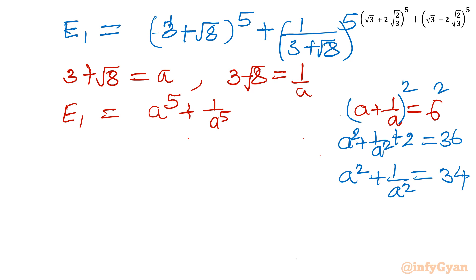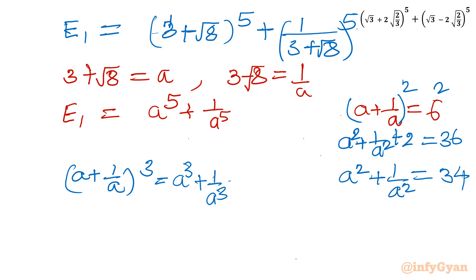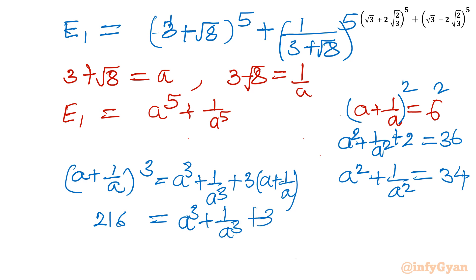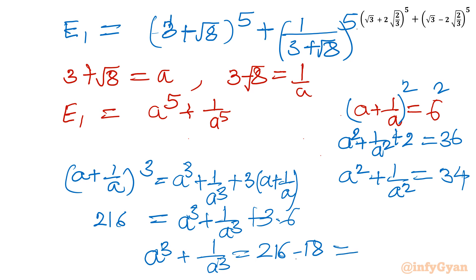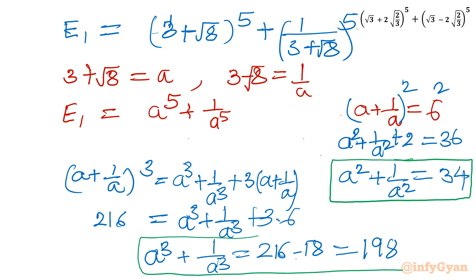Cubing a + 1/a = 6: a³ + 1/a³ + 3(a + 1/a) = 216, so a³ + 1/a³ + 18 = 216, giving a³ + 1/a³ = 198. Now we have a² + 1/a² = 34 and a³ + 1/a³ = 198.